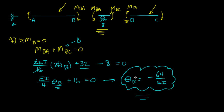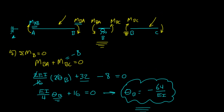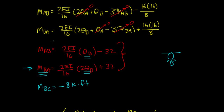Welcome back. In the last video, we figured out what theta_B was when we took equilibrium about joint B. Now we need to figure out what M_BA is and what M_AB is. We actually have those equations — we derived them in the video. We have the equation for M_AB and the equation for M_BA, and now we have theta_B.